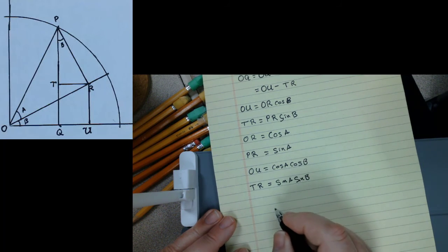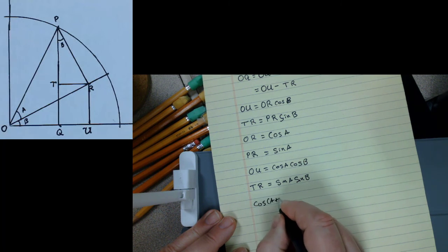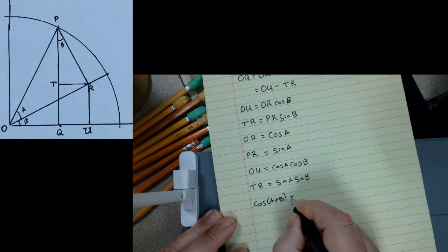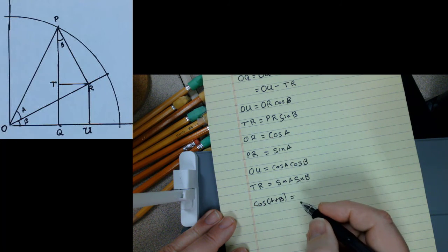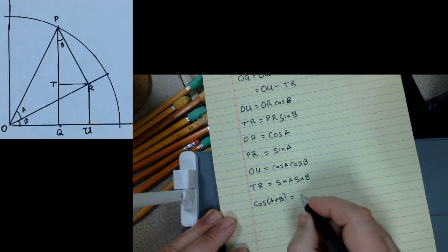And therefore, the cosine of A plus B, which is as you recall equal to OU minus TR,